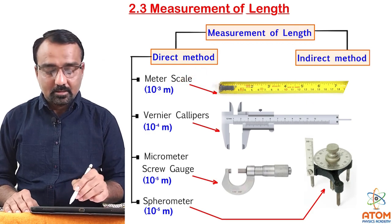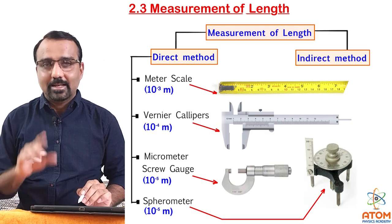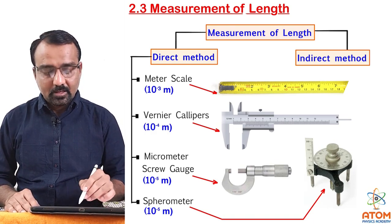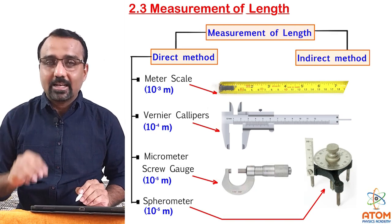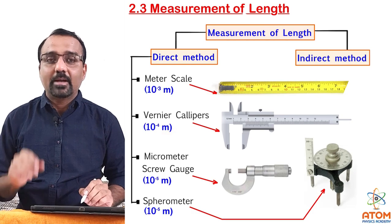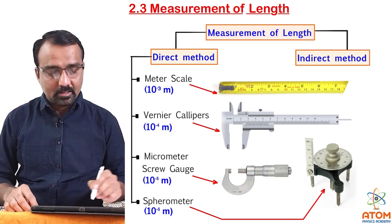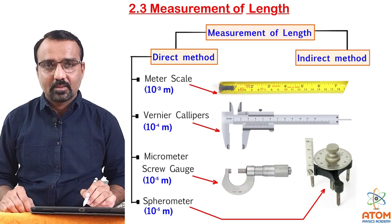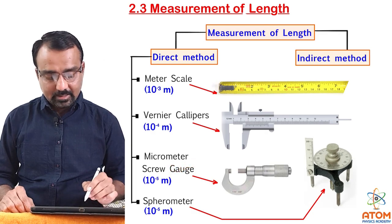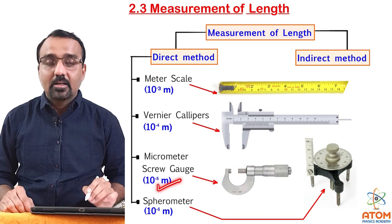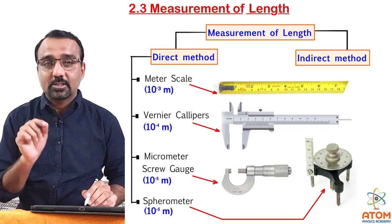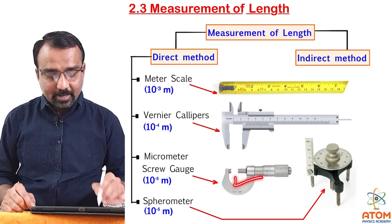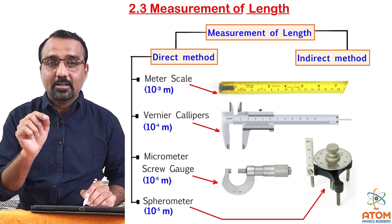By meter scale, we can measure minimum up to 10 raise to minus 3 meter, that is 1 millimeter, and maximum up to 10 raise to 2 meter, that is 100 meter. By vernier calipers, we can measure even more accurately — up to 10 raise to minus 4 meter, that is 0.1 millimeter. You can even measure the diameter of the nib of a ball pen with vernier calipers. Micrometer screw gauge and spherometer can both measure up to 10 raise to minus 5 meter, that is 0.01 millimeter or 0.1 micrometer. The micrometer screw gauge can easily measure the diameter of our hair.